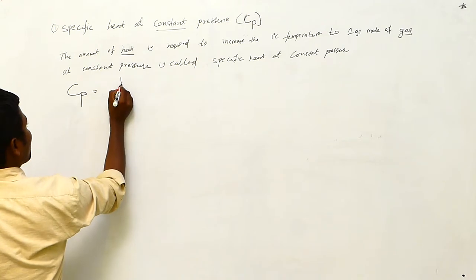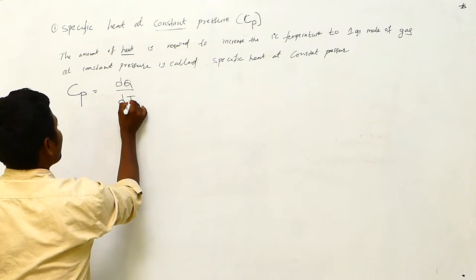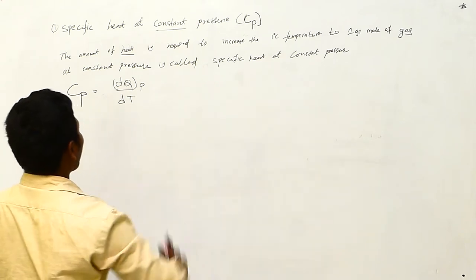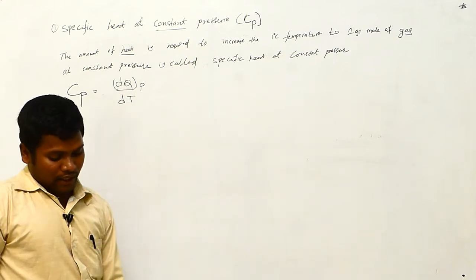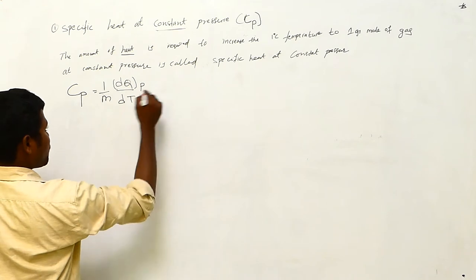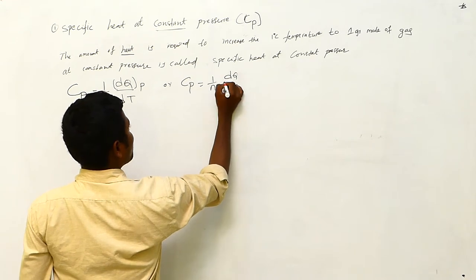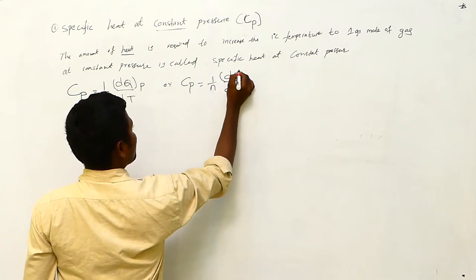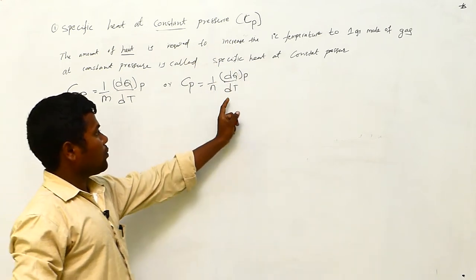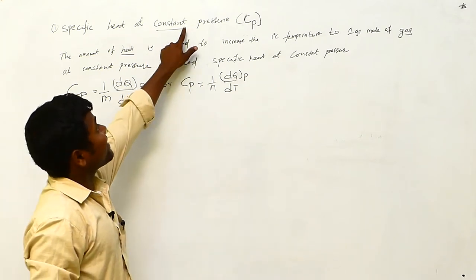The mathematical formula: we denote the heat as dQ and the temperature as dT. For one gram mole of gas, we can write C_P is equal to one by N, dQ by dT, at constant pressure. That is the formula: C_P = (1/N)(dQ/dT) at constant pressure P.